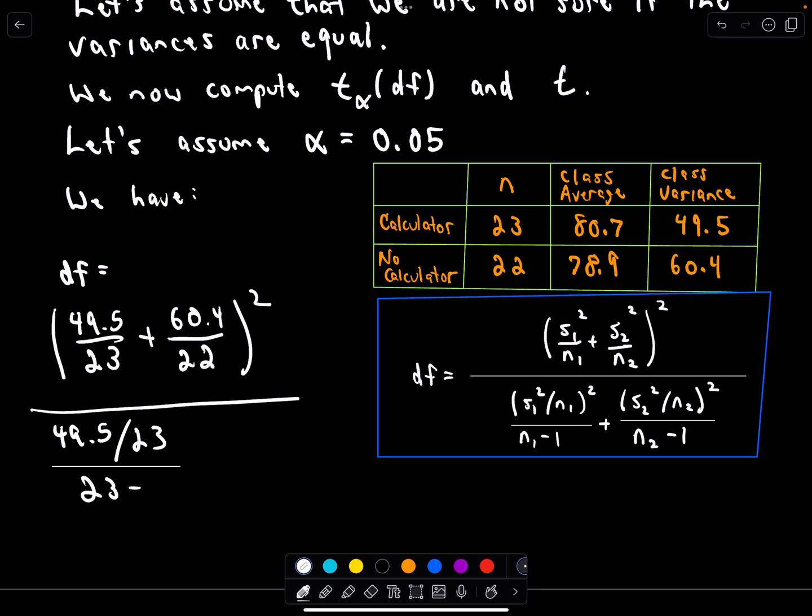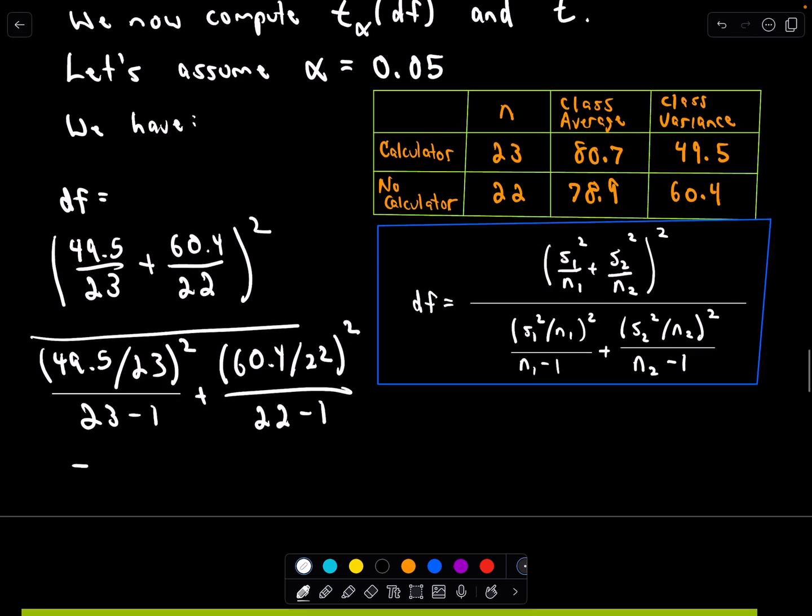So 49.5 divided by 23 and that's all over n1 minus 1 or that's going to be 23 minus 1. We'll just leave it there without actually simplifying it. Let me make sure to put the square on there, we don't want to leave that out. And then we'll do the same thing for that other term. This is 60.4 divided by 22 all squared and that's divided by 22 minus 1, and when I computed this I got this to be equal to 42.12.